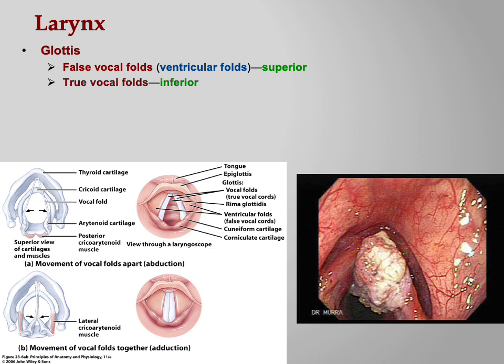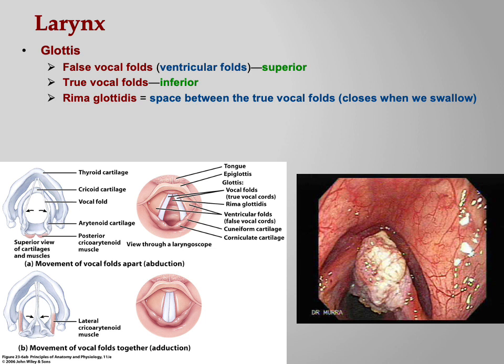It's by opening and closing to varying degrees that we get differences in pitch. When they're wide open, you produce low sounds; as they get closer together, you produce higher pitch. The rima glottidis — 'rima' means space, 'glottidis' means of the glottis — is the space between the true vocal folds. When the true vocal cords come together, the rima glottidis disappears. They close when we swallow.